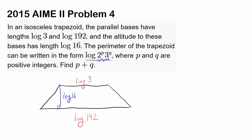Log 3 is already concise. How about log 16? We can simplify: 16 is 2^4, so this equals 4 log 2. How about 192?